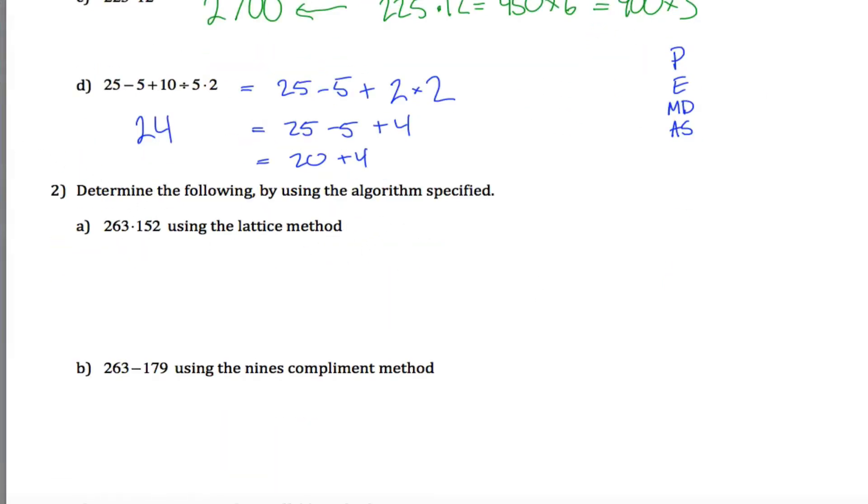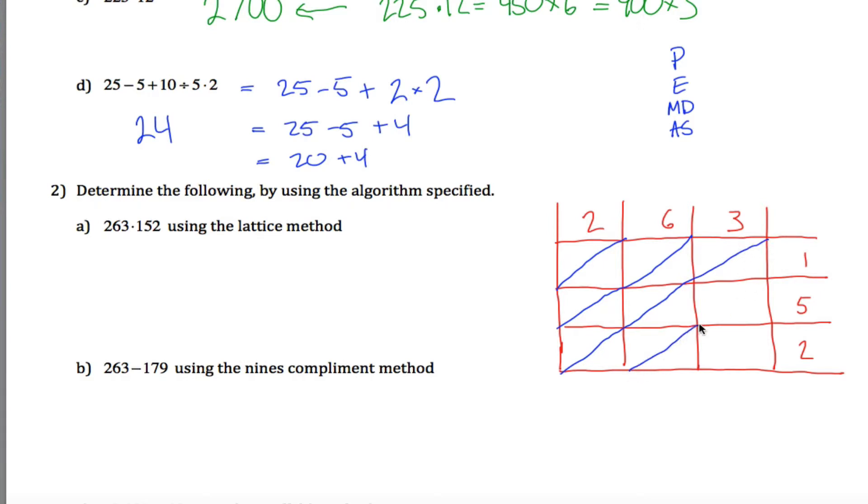Determine the following using the algorithm specified. So multiply these numbers together using the lattice method. For the lattice method, I'll take one of the numbers and write them horizontally. And the other number, write it vertically. And that's going to give you this little grid here. And you're going to fill in this grid by multiplying these numbers. But if you get a two-digit number, you're going to write it really carefully. You'll write one of the digits, the tens digit above this line and the ones digit below this line.